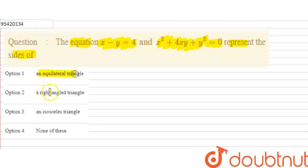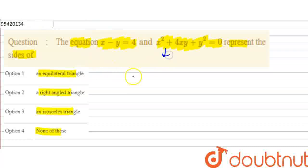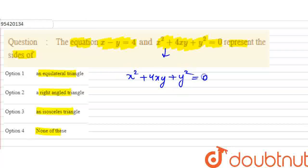The options are: equilateral triangle, right angle triangle, isosceles triangle, and none of these. So, if you have 2 equations given, which triangle do they represent? First, let's consider the equation x squared plus 4xy plus y squared equals 0.